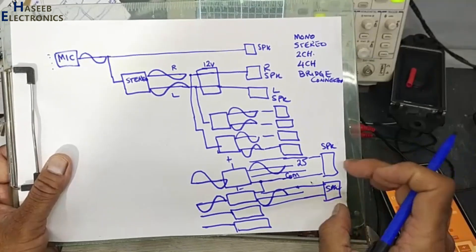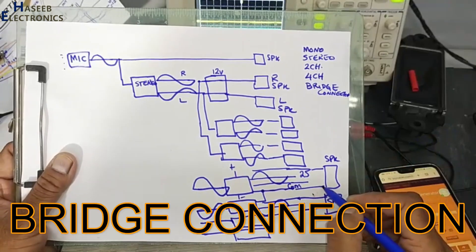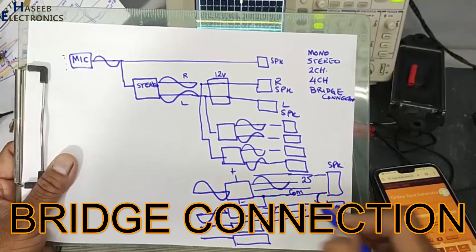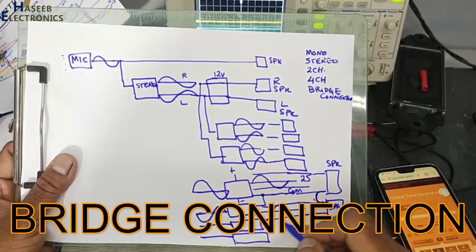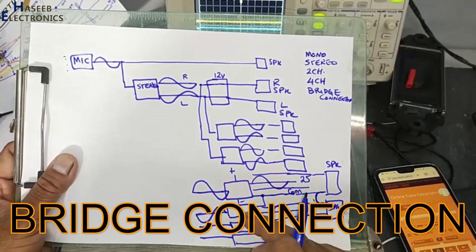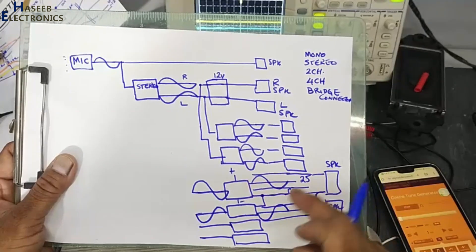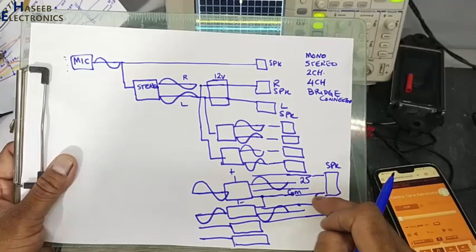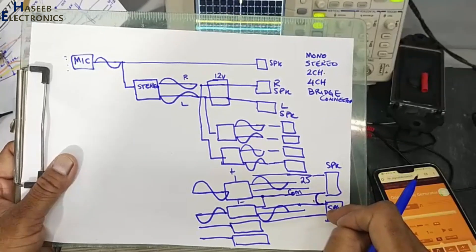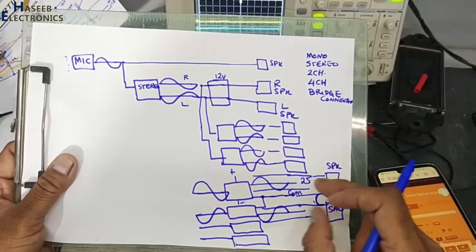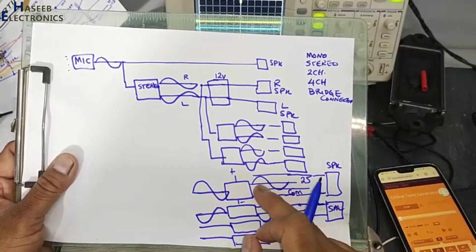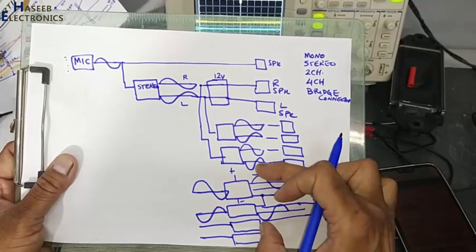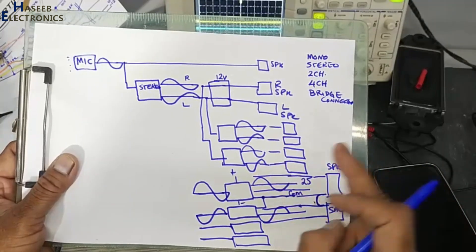But now if we connect common pins together, we will not connect to common. Positive here and negative of this speaker here to this out. Positive to this out, negative to this out. That time two speakers will come in series. When two are in series and we connect here, the voltage amplitude from this peak to this peak will double. When these voltages are doubled, the current will double. Let's connect oscilloscope.